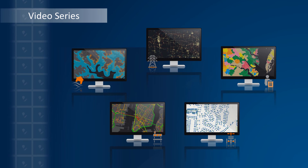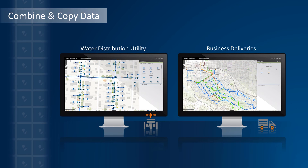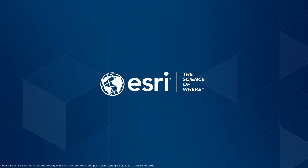Throughout the series, I will try to use real-world examples from a variety of industries to showcase some of the capabilities found in Smart Editor that could improve your own editing processes. Check out the first video now and learn how you can combine and copy information by bringing together data from separate sources into a single target layer. Stay tuned as more videos are made available periodically. Happy editing!